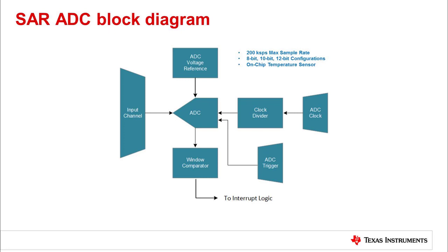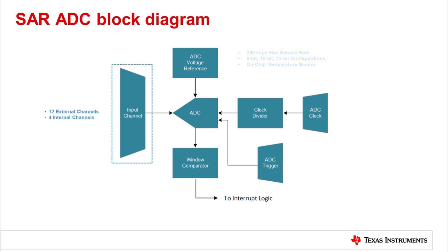It also features an on-chip temperature sensor that feeds directly into the ADC. The ADC supports 12 external channel inputs and four internal channel inputs. The internal channels include the on-chip temperature sensor, internal shared reference voltage, and device power and ground.